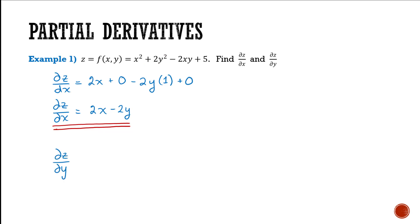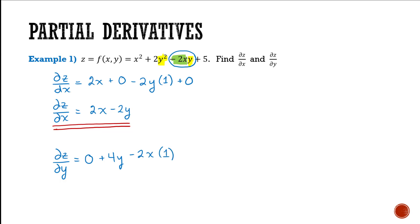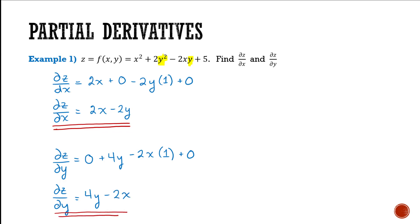Now let's do the partial derivative of z with respect to y. Di z by di y: what are my y terms? I have a y term in 2y squared and a y in negative 2xy. Everything else gets treated like a constant, so x squared becomes a constant with derivative 0. The derivative of 2y squared is 4y. For negative 2xy, negative 2 and x are treated like constants, so I have the coefficient negative 2x times the derivative of y, which is 1. The derivative of 5 is 0. Simplifying, di z by di y is equal to 4y minus 2x, and that is the final answer for the partial derivative of z with respect to y.